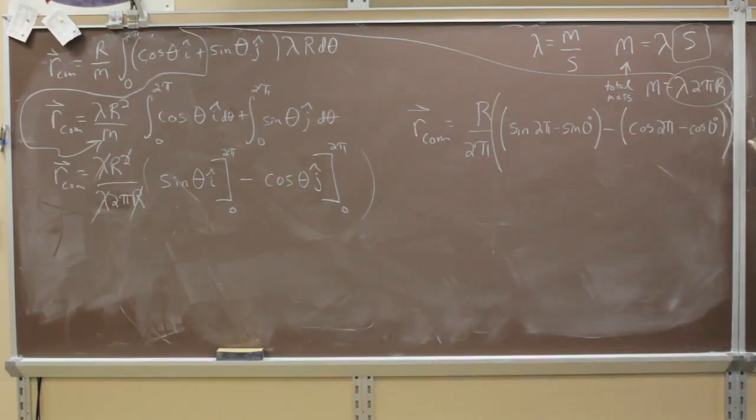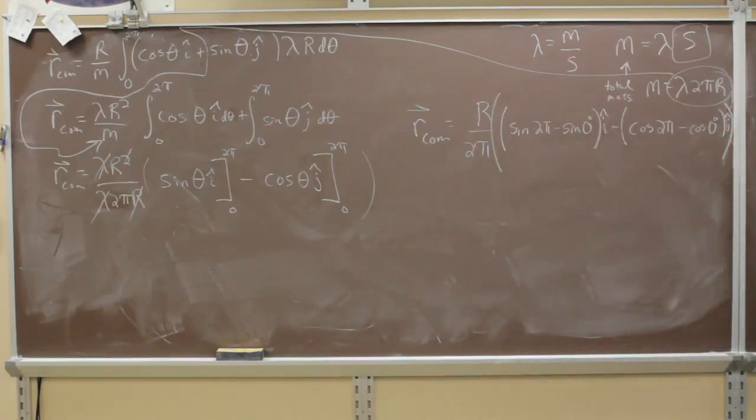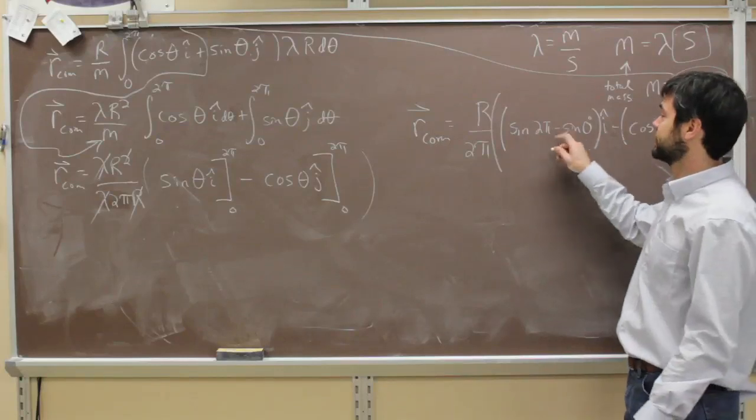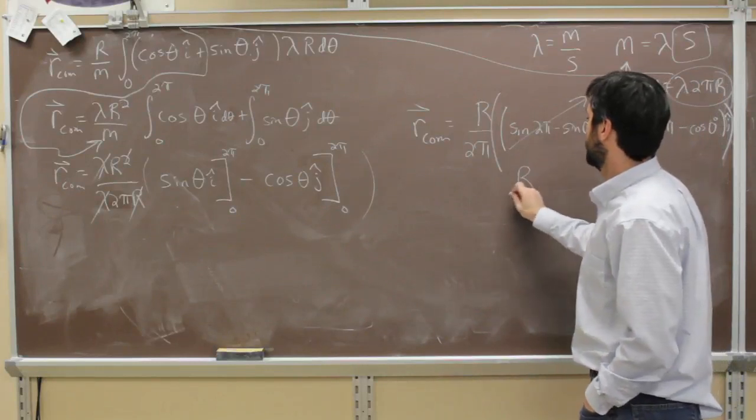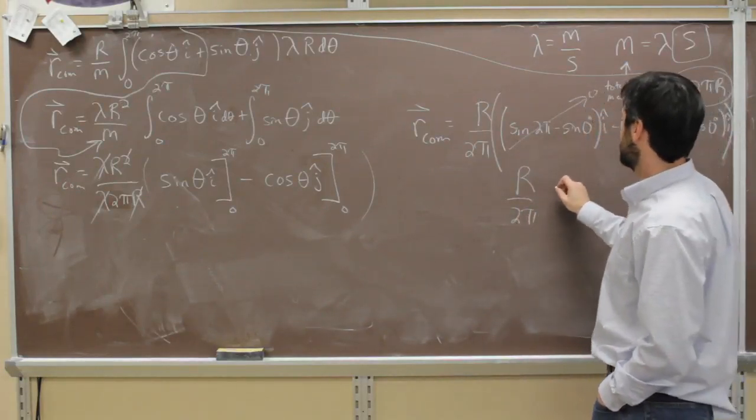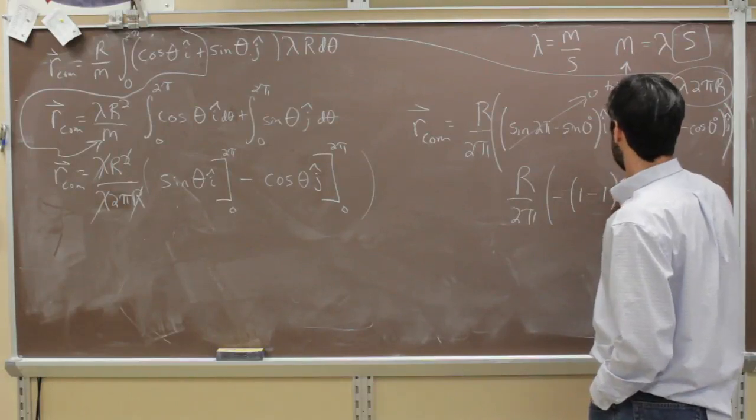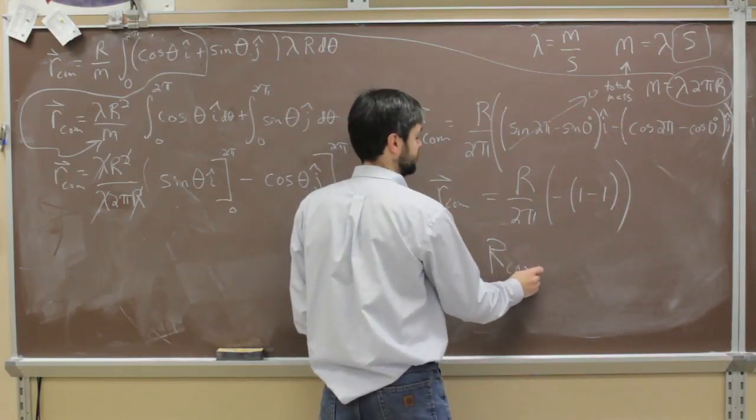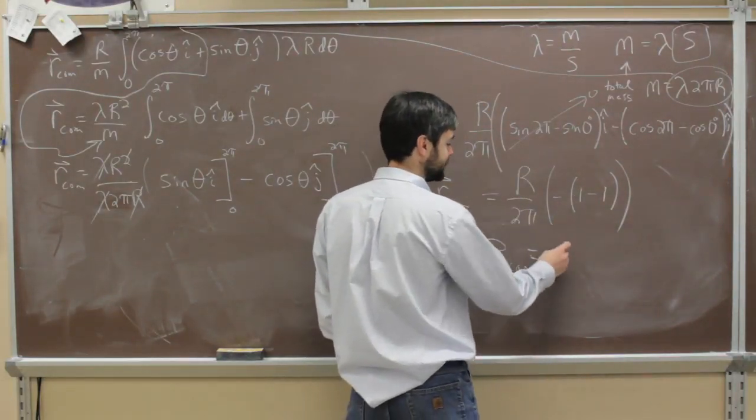I think we're still doing okay. That's all j hat. That's still all i hat. Okay. What is sine of 2 pi? Zero. It is zero. What's sine of zero? Zero. Zero. So that's zero minus zero. So that's gone. And then here we've got cosine of 2 pi. That's 1. And what's cosine of zero? One. So we have r over 2 pi. I told you it was depressing. Minus 1 minus 1. Right? Yes. And that ends up becoming what? Negative r. Oh, is that negative zero? What's 1 minus 1? Zero. Zero. So that becomes? Zero. Zero.